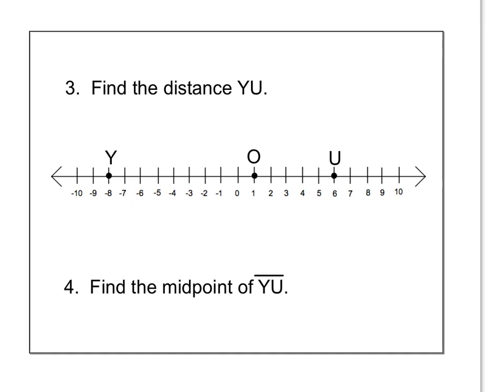All right. So there's two ways to find the distance from y to u. One way is you could count it. Since this number line is counting by 1's, you could just count how far over they are from each other or how far apart they are. So it would go like this. 1, 2, 3, 4, 5, 6, 7, 8, 9, 10, 11, 12, 13, 14. So technically 14 is your answer.